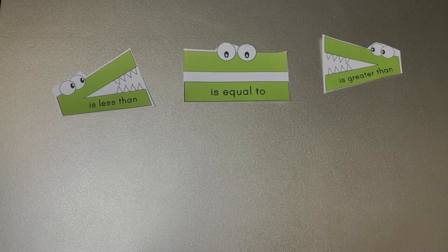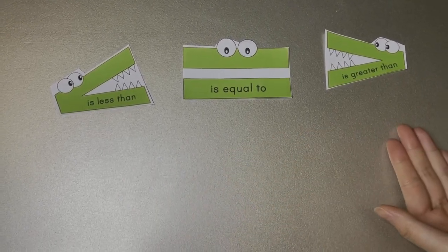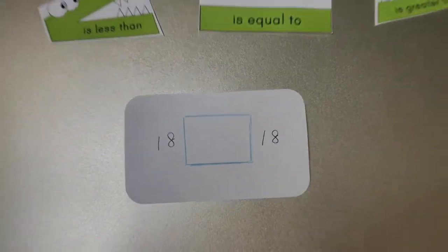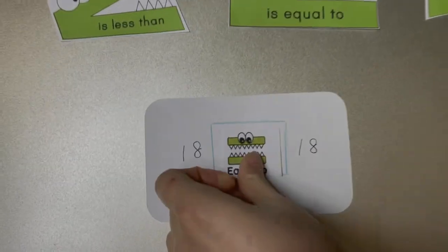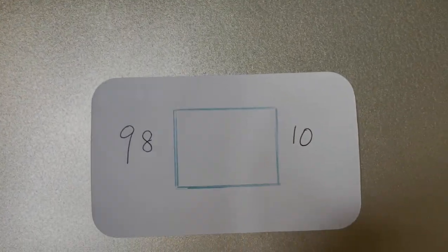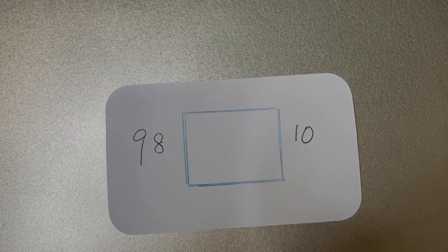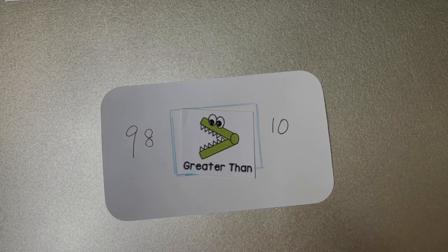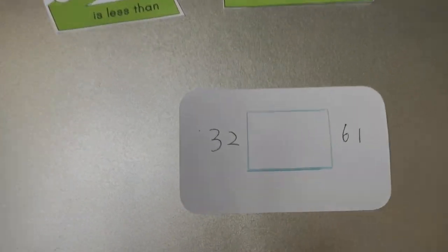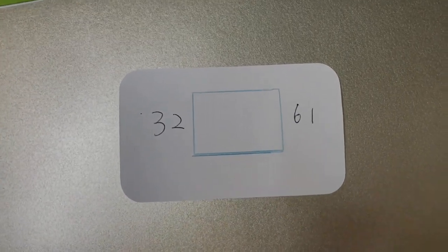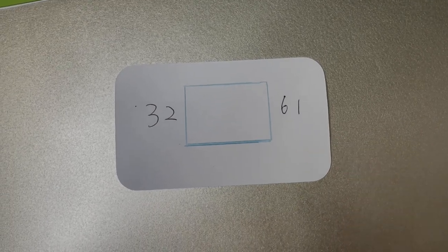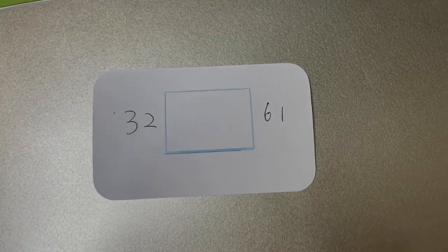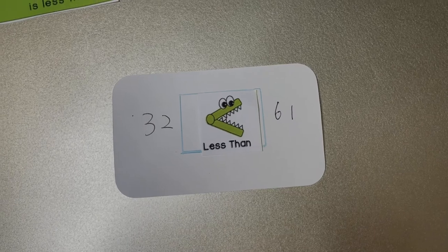Let's play a game to practice. I have three comparison symbols — you tell me which one to use in each question. First: 18 and 18. Very good — it's equal to. Let's try another one: 98 and 10. Which symbol do we use? Very good — greater than, because 98 is greater than 10. Let's try the last one: 32 and 61. Is 32 bigger or 61 bigger? Which symbol do we use here? Very good — 32 is less than 61. Great job!